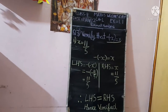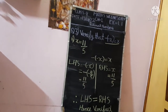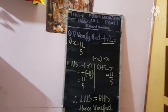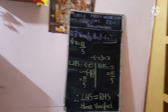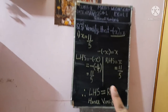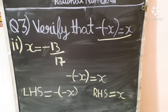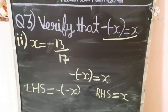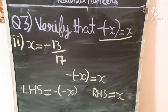The equation minus bracket start minus x bracket close should equal x. As you can see, I have written LHS equals RHS, hence verified. Now this is our second part, where x is given as minus 13 upon 17.